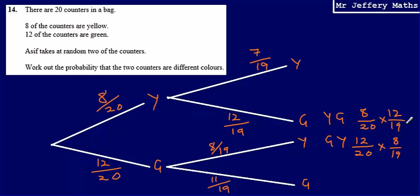So, our probabilities here, 8 times 12 is going to give us 96. So, that one there is going to be 96 over 380. That gives us 96 over 380. This one here would also give us 96 out of 380.